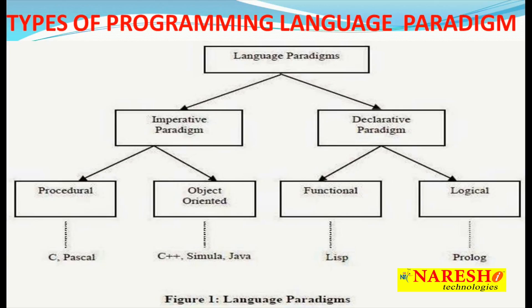The declarative paradigm also has two types. For example, LISP is a very popular declarative language — generally called the functional programming paradigm — and the second is logic-oriented, like Prolog. The reason I'm explaining these paradigms is because I want to define Python properly, and that is why I introduced these definitions.